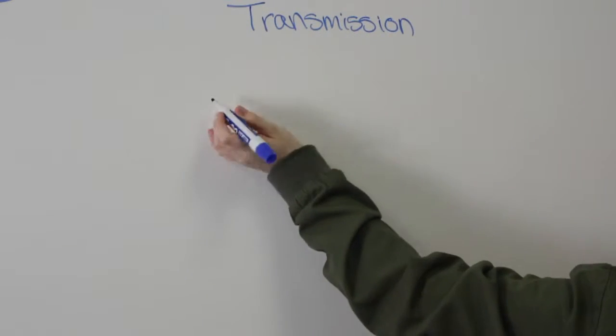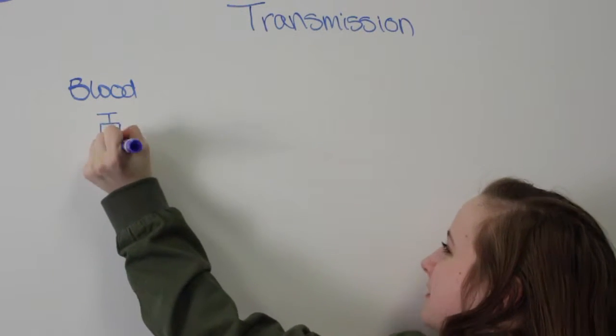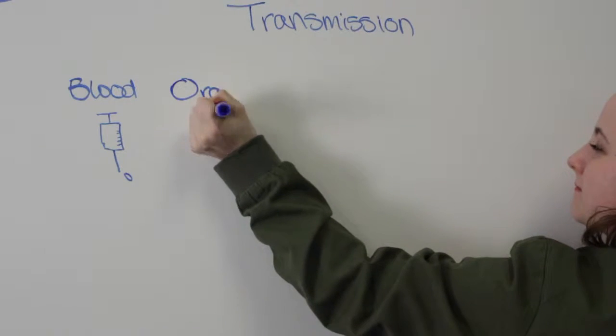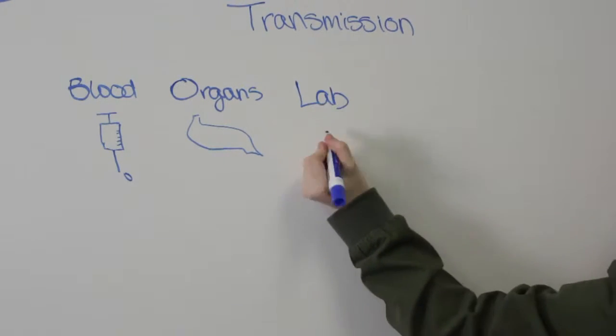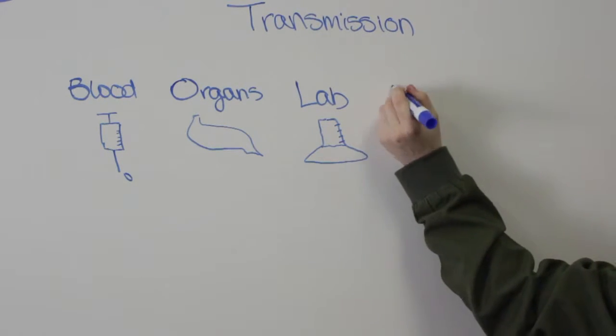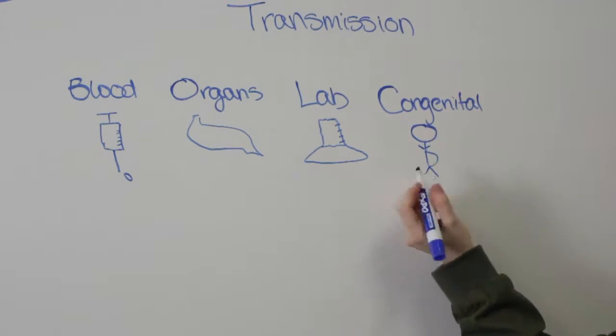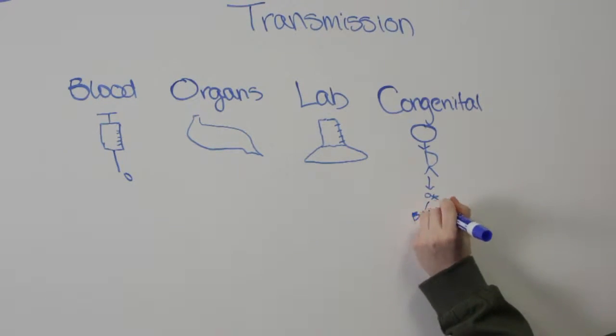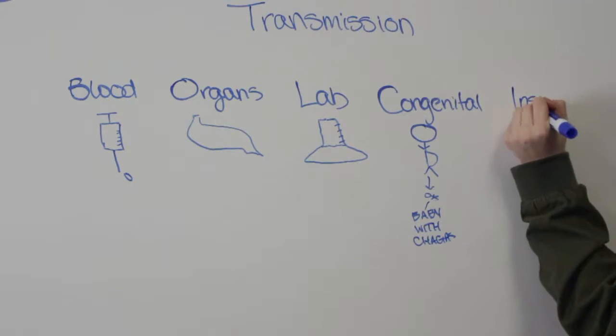Chagas is transmitted through five primary vectors: congenitally, contaminated blood, contaminated organs, accidental laboratory exposure, and infected insects, although the insect vector is the most common in rural areas with less socioeconomic development.